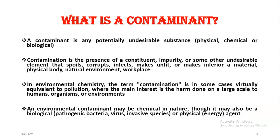A contaminant is any potentially undesirable substance — contaminants can be physical, chemical, or biological. Contamination is the presence of a constituent, impurity, or some other undesirable element that corrupts, infects, makes unfit, or makes inferior a material, physical body, or natural environment. In environmental chemistry, the term contamination is in some cases virtually equivalent to pollution, where the main interest is the harm done on a large scale to human organisms or environments. An environmental contaminant may be chemical in nature, or it may also be biological — such as pathogenic bacteria, viruses, invasive species — or a physical energy agent.